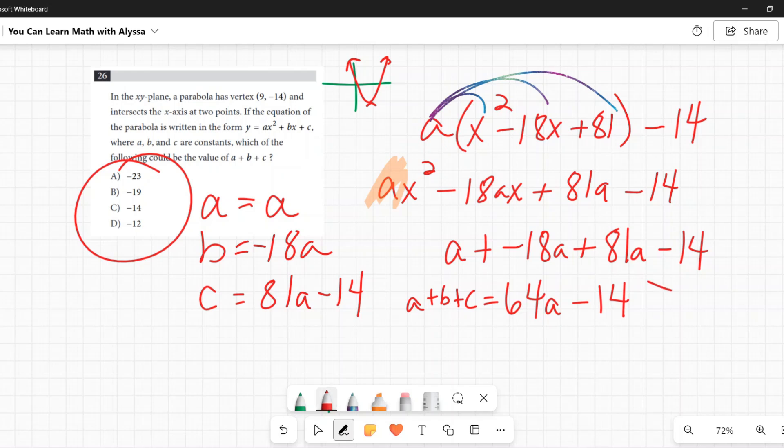If I set 64a minus 14 equal to each of these in turn, and then I solve, in which one do I get a positive value for a?